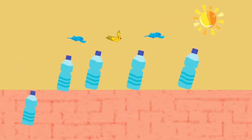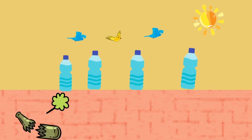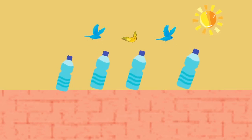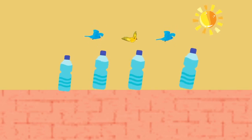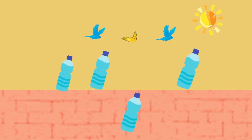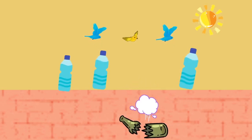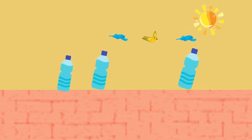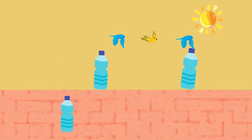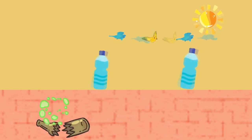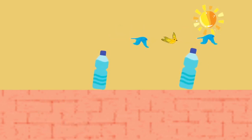Five green bottles sitting on the wall, and if one green bottle should accidentally fall, there'll be four green bottles sitting on the wall. Four green bottles sitting on the wall, and if one green bottle should accidentally fall, there'll be three green bottles sitting on the wall.